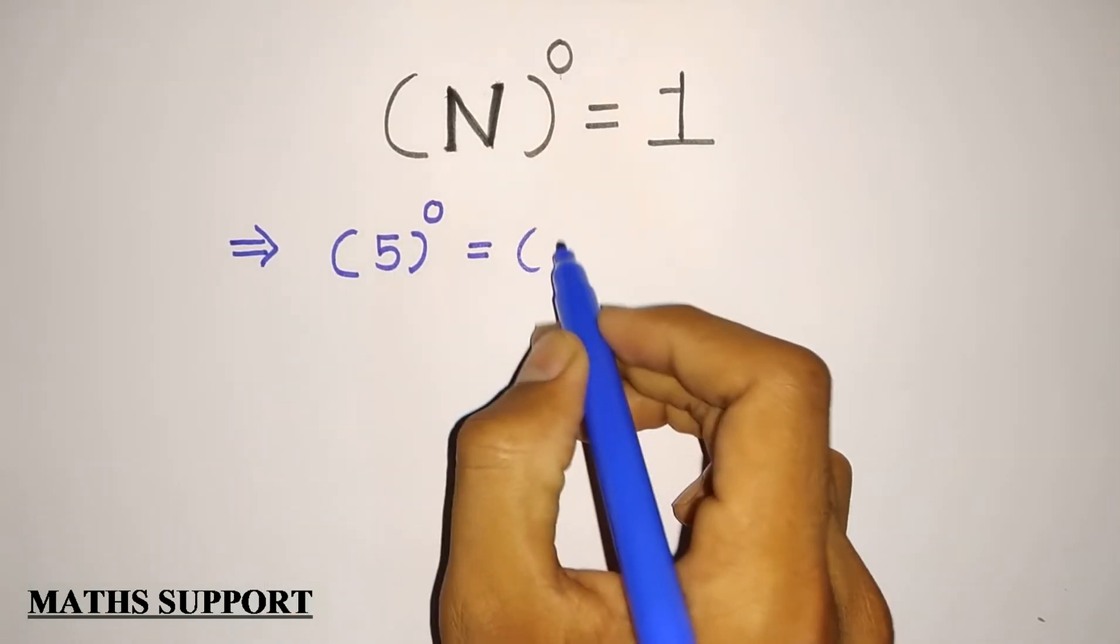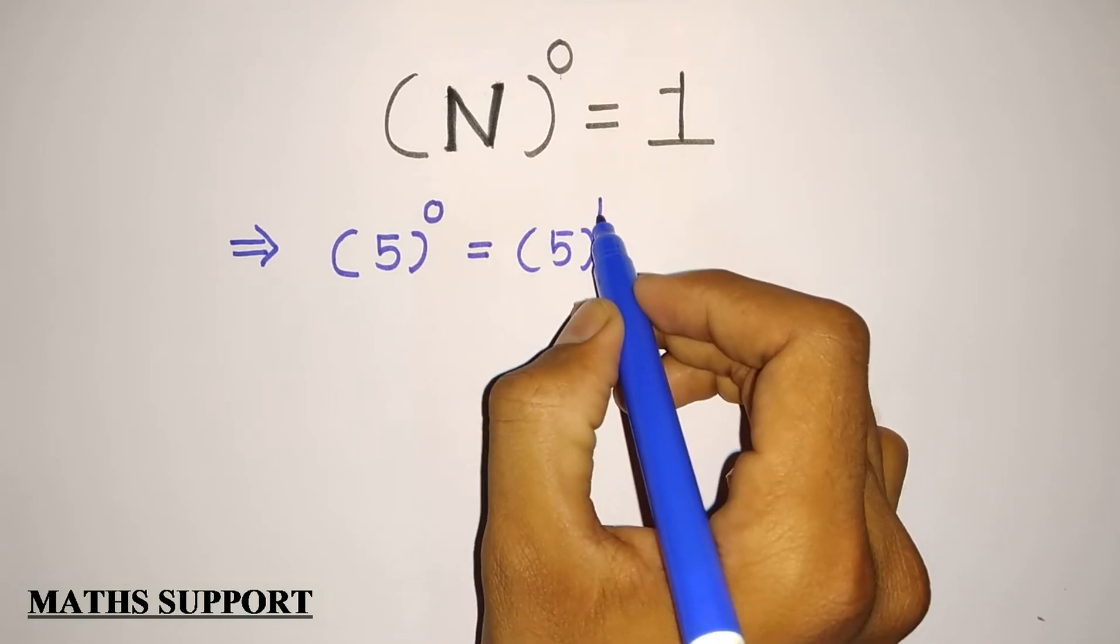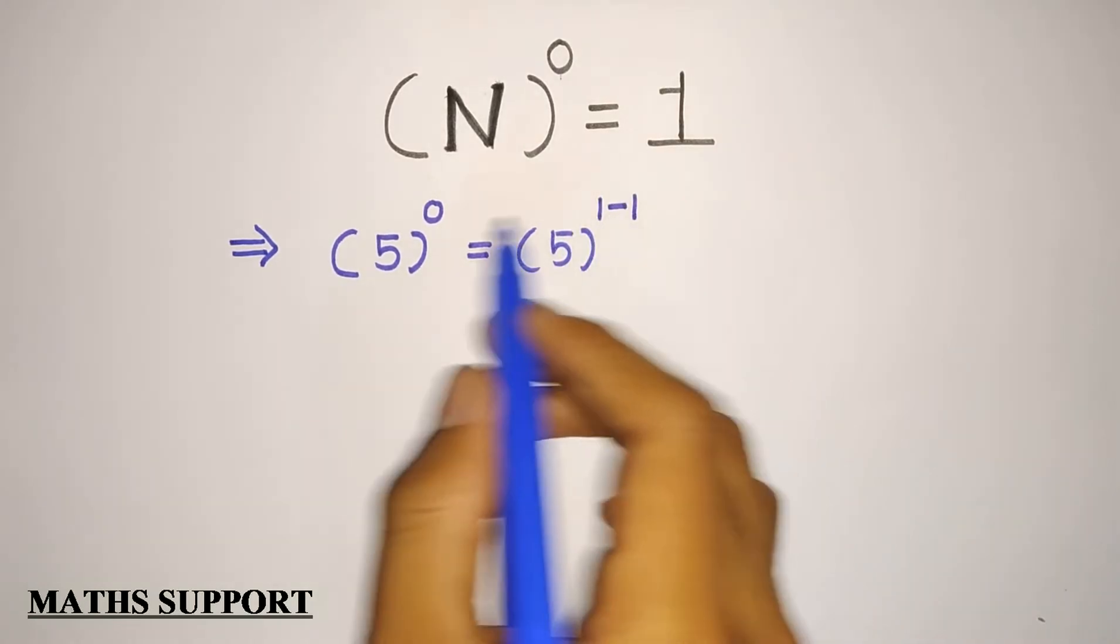Now I can modify this like this. 0 can be written as 1 minus 1. That is 0.